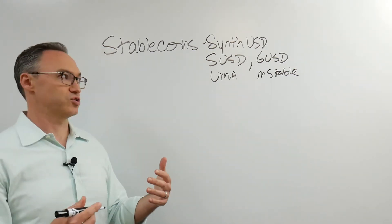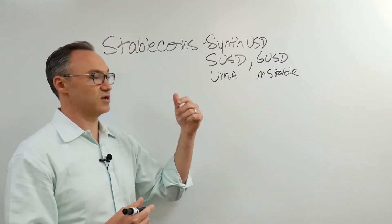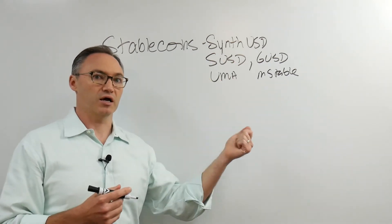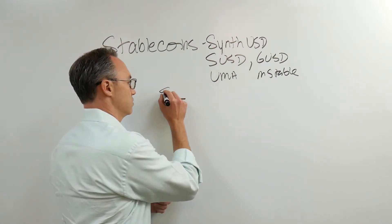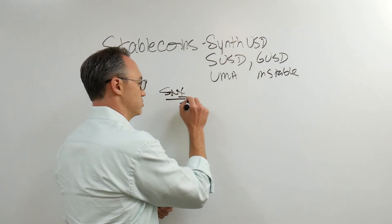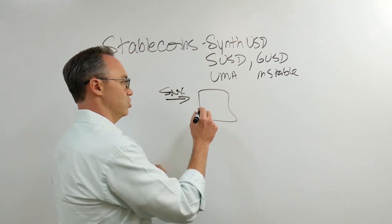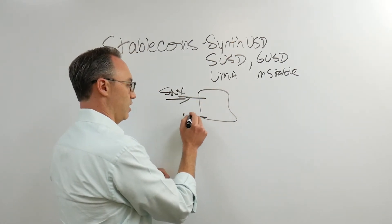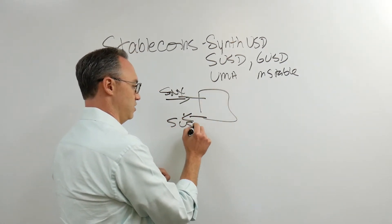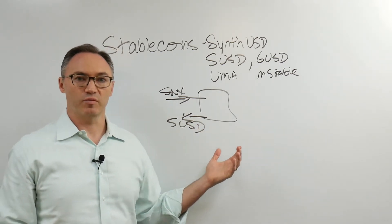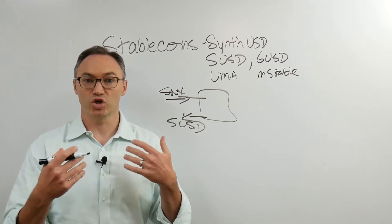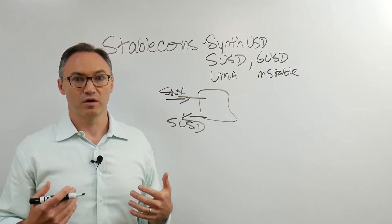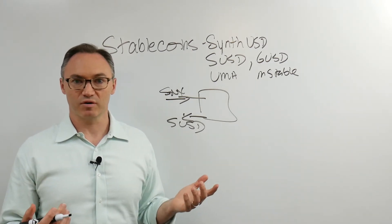The idea is they want to create several types of tokens that essentially aim to represent a dollar. For instance, on the synthetics network, when I lock up my synthetics tokens, my SNX tokens, I buy SNX which is an ERC-20 token, I lock it up and I mint SUSD.